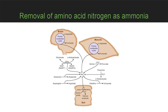All of the reactions are reversible except that of glutamate dehydrogenase. Only the dehydratase reactions, which produce ammonium from serine and threonine, require pyridoxal phosphate as a cofactor. The reactions occurring in the muscles or the gut can all occur in the liver, where the ammonium generated can be converted to urea.